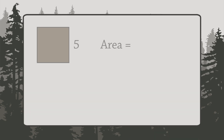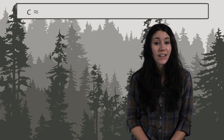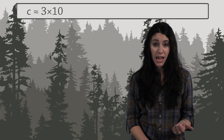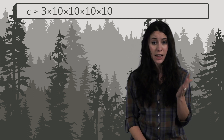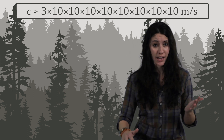There are many times in math and science when you have to multiply a number by itself over and over again. For example, the area of a square with sides of length 5 is 5 times 5. The volume of a cube with sides of length 7 is 7 times 7 times 7. And the speed of light is roughly 3 times 10 times 10 times 10 times 10 times 10 times 10 times 10 times 10 meters per second.